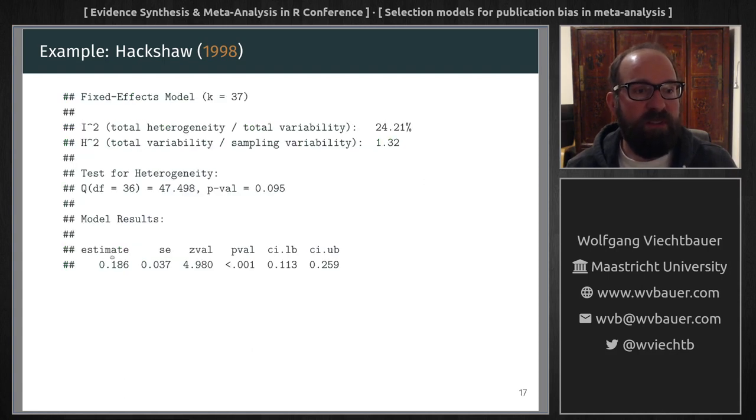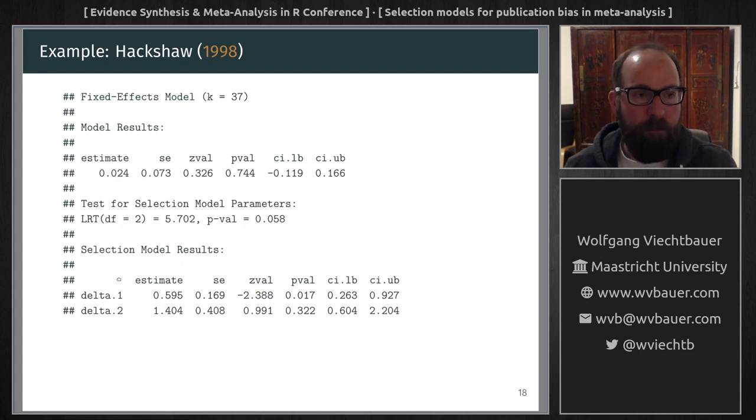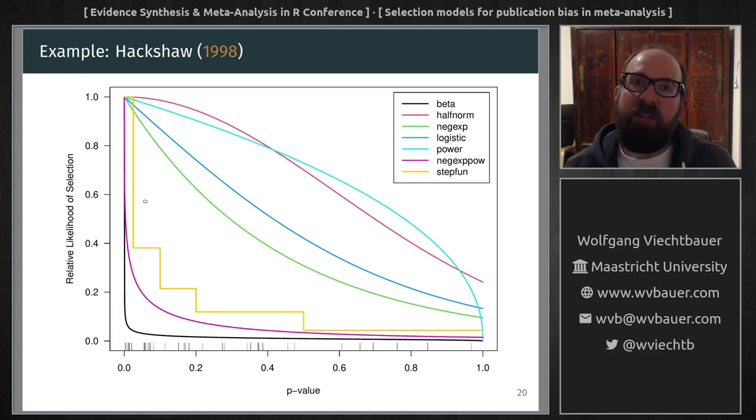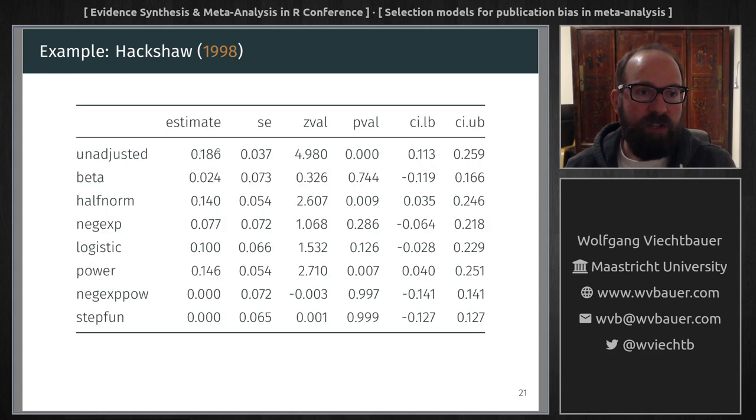So these are the results from the fixed-effects model and then from the beta selection model. So here we have the estimates of the two selection parameters and then the adjusted effect. And these are the results from the step function model that I fitted and again the adjusted effect. And this is what the selection function looks like for all these different types of models. And some of these models suggest less severe forms of selection and other models suggest quite severe forms of selection. And so depending on the model, the adjusted estimate can actually be quite close to zero.